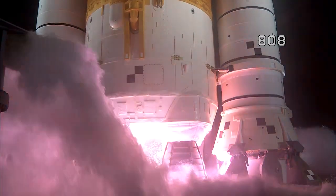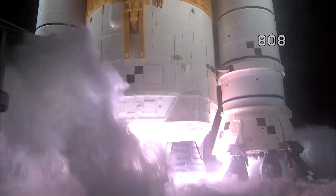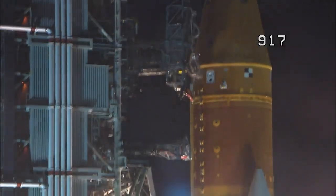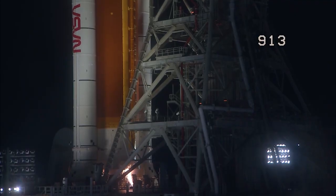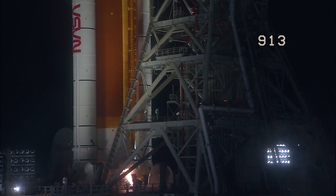Liftoff happens once the core stage engines start and the solid rocket boosters ignite. The rocket rapidly gains speed as it lights up the sky. And here we go. Hydrogen burn off igniters initiated. 7, 6,